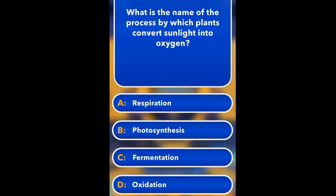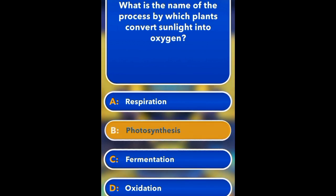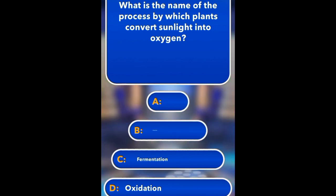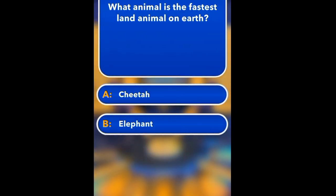What is the name of the process by which plants make their own food? Expiration, Photosynthesis, Fermentation. Photosynthesis.